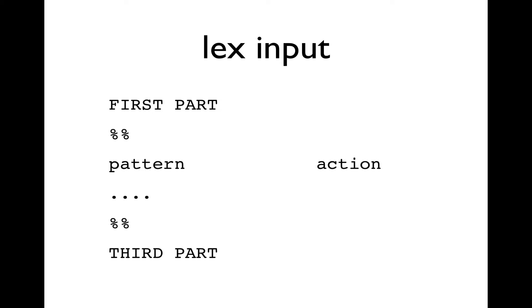Lex input is fairly straightforward — a text source file with three parts. The first part is optional and can contain lines that control dimensions of the tables generated internally by Lex. It can contain definitions for text replacements, and it can contain global C code utilized by the actions. There's a special syntax for including C code in that first part, and we'll take a look at that later in our hands-on example.